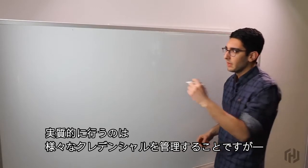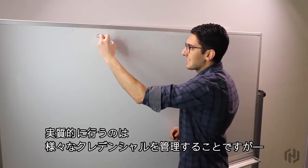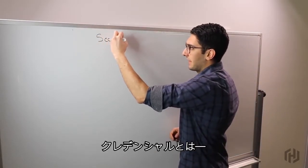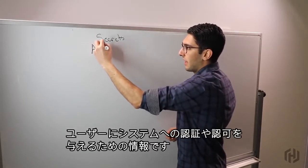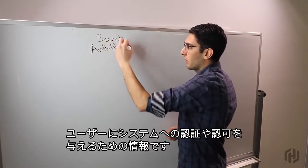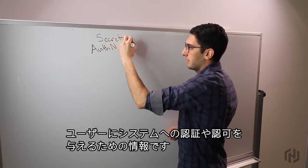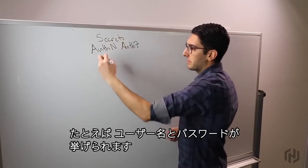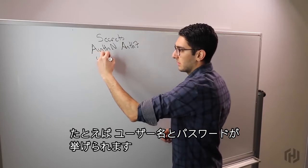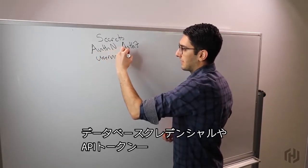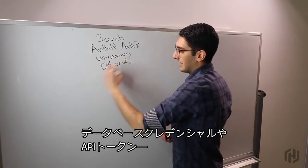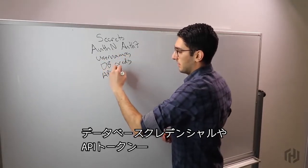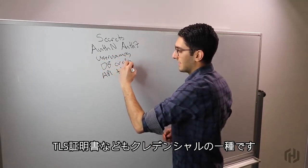When we talk about secret management, what we're really talking about is managing a set of different credentials. And what we mean when we talk about these credentials is anything that might grant you authentication or authorization to a system. Some examples of this might be usernames and passwords, database credentials, API tokens, or TLS certificates.